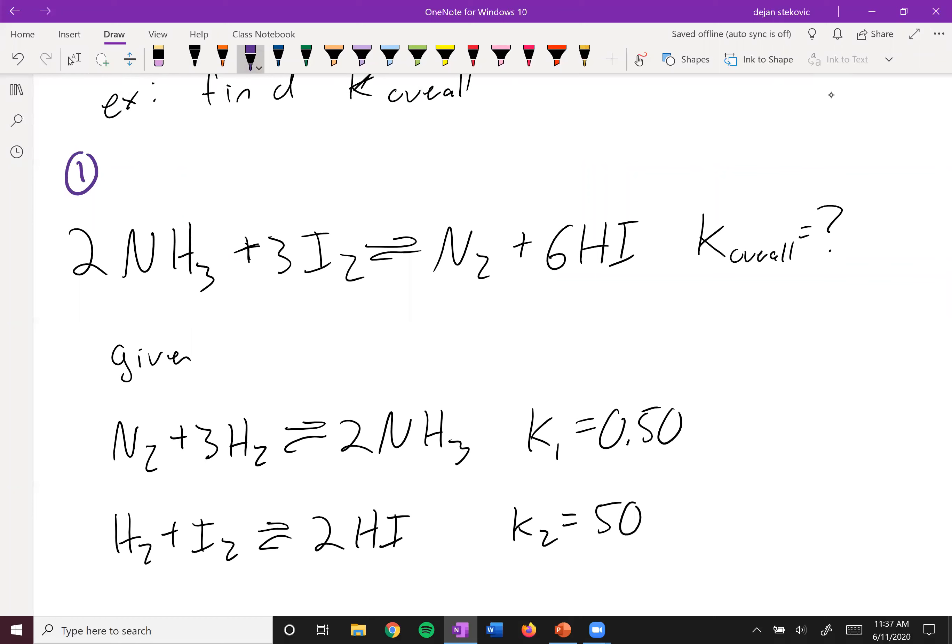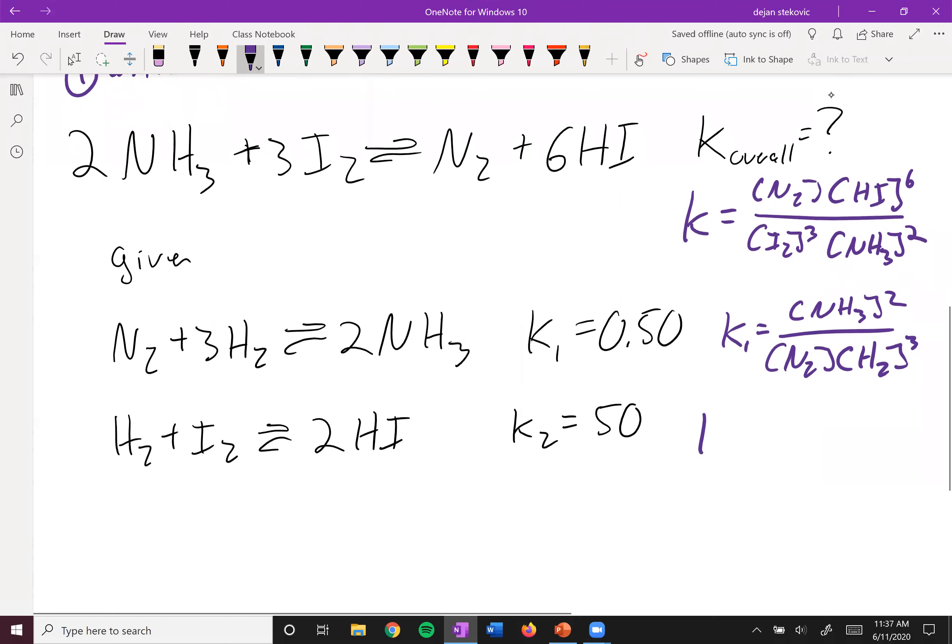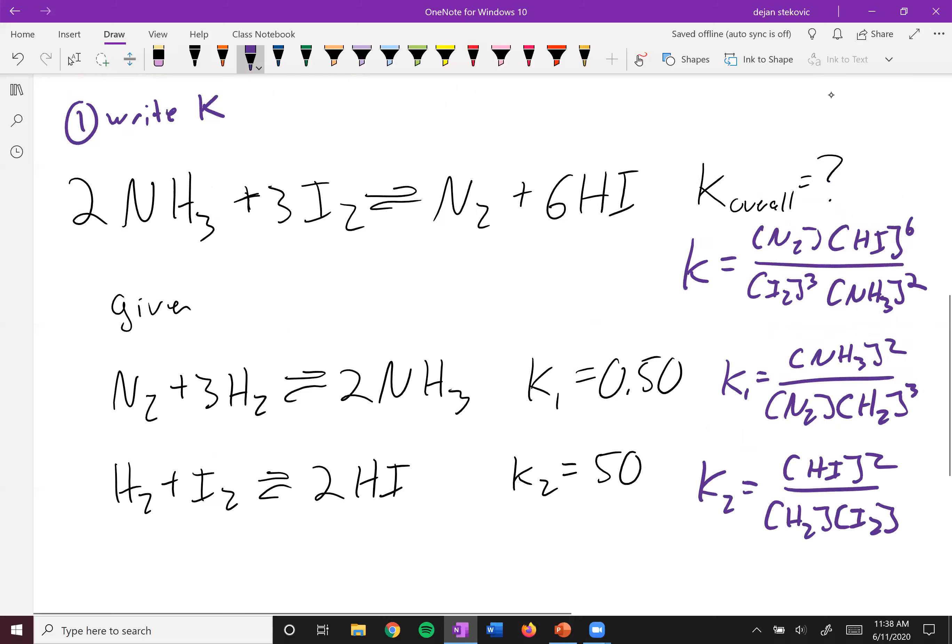So the first thing that we want to do is we want to write our Ks. What are our Ks equal to? So we can write this K. It's always products over reactants taken to their coefficients. So in this case, it's 6HI to the sixth over I2 cubed over NH3 squared. And you want to write the Ks for all of these. So this K1 is going to be equal to NH3 squared over N2 times H2 to the third power. And then this K2 here will be equal to HI squared over H2 times I2. So that's the first thing you want to do.